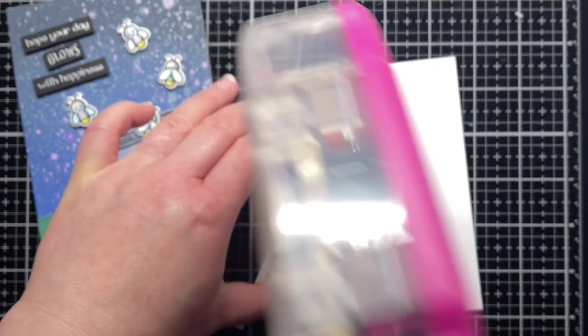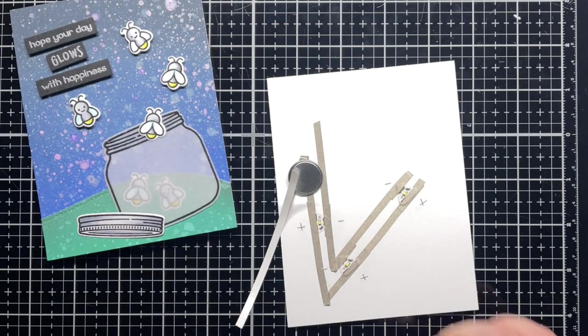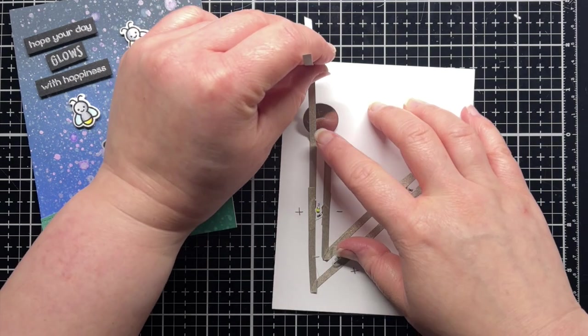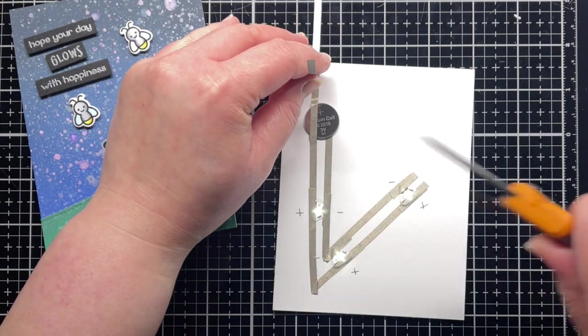I add a little adhesive next to the tape to adhere my battery securely to the circuit panel. Now my lights are on permanently, or until the battery dies.